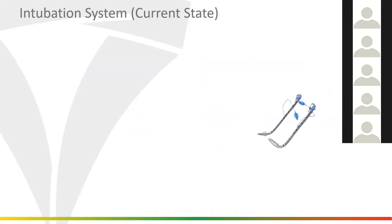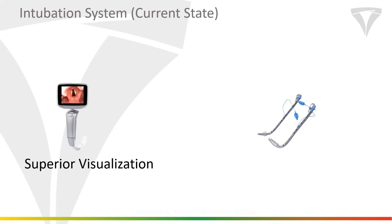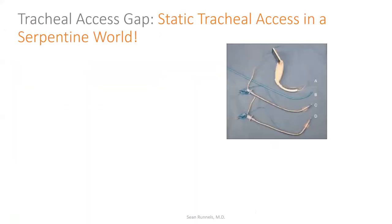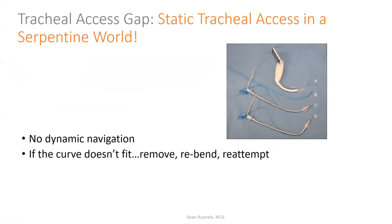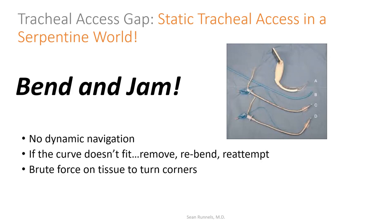Our current state in rescue: VL for rescue, static tracheal access, one operator, static tracheal access in a serpentine world. 8% of the time we can't rescue the patient — almost one in ten of our rescues turn into mega attempts, and we either wake the patient up or we get the tube in but cause tissue harm. No dynamic navigation widely available. If the curve doesn't fit, remove, re-bend, and re-attempt. Brute force on tissue to turn corners — bend and jam. Back to our co-evolution table: static access, tracheal access gap — that's where we are on rescue intubations now.